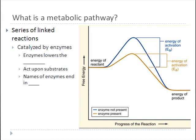Metabolism is the sum of all chemical reactions which occur inside the cell. Some of those reactions are used to build larger molecules — we call those anabolic reactions. Like anabolic steroids help you build muscle, anabolic metabolism refers to chemical reactions that allow you to create larger molecules. By comparison, when you break down molecules into smaller parts, that's called a catabolic reaction.